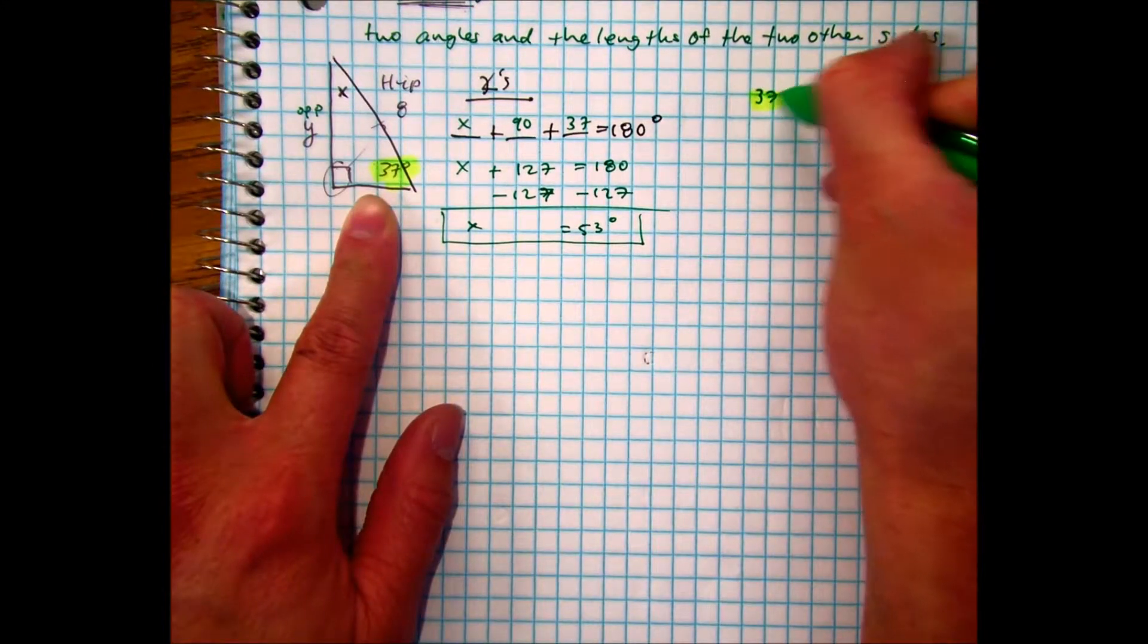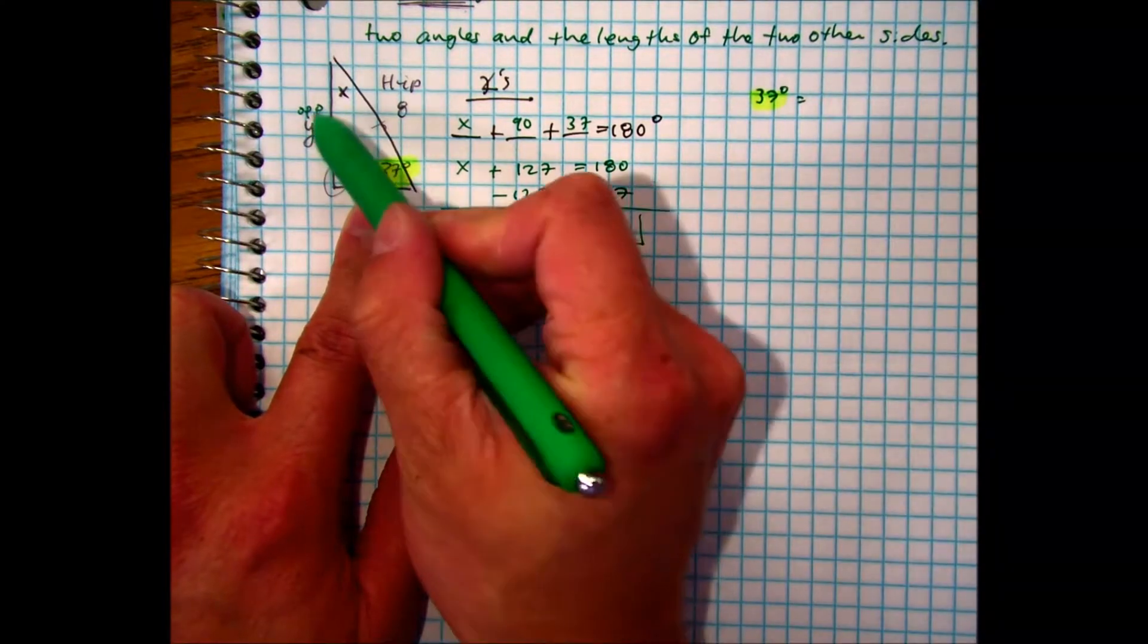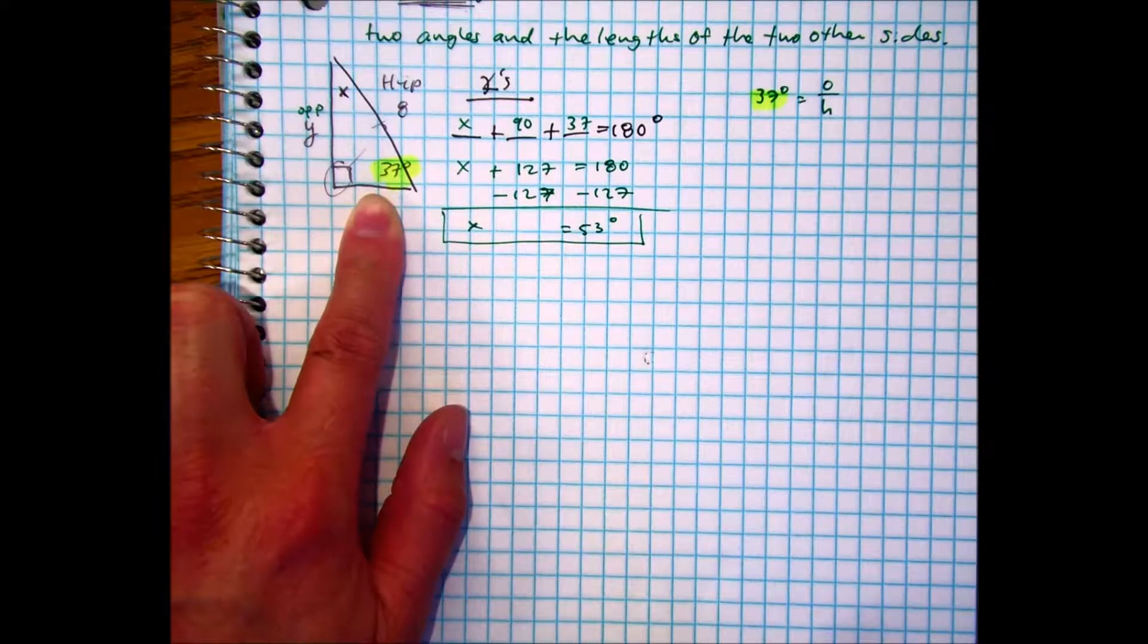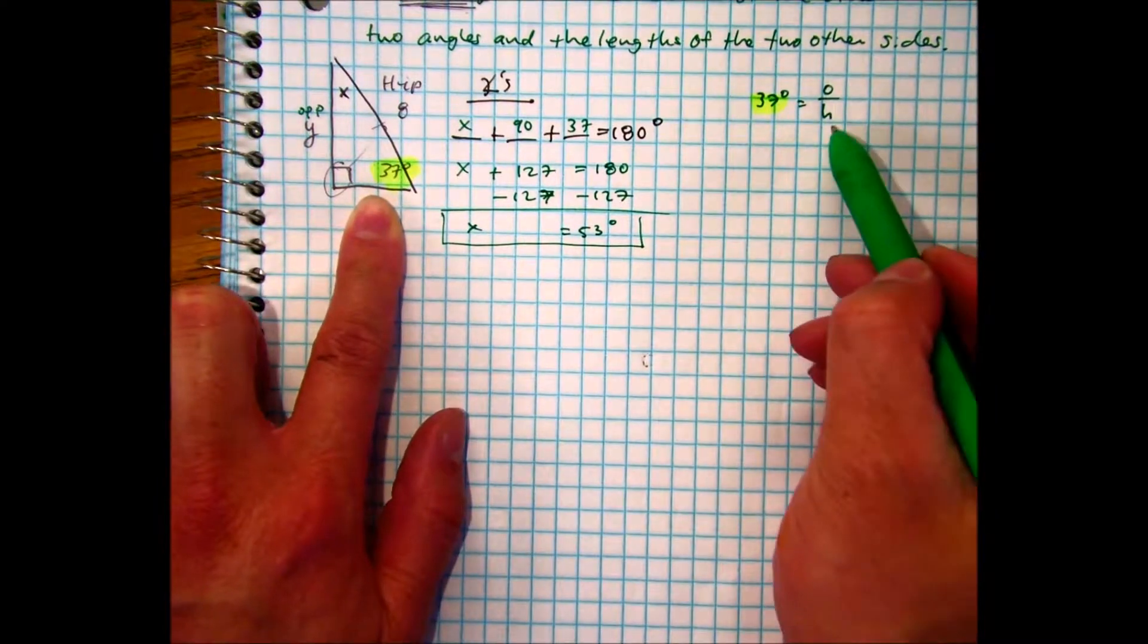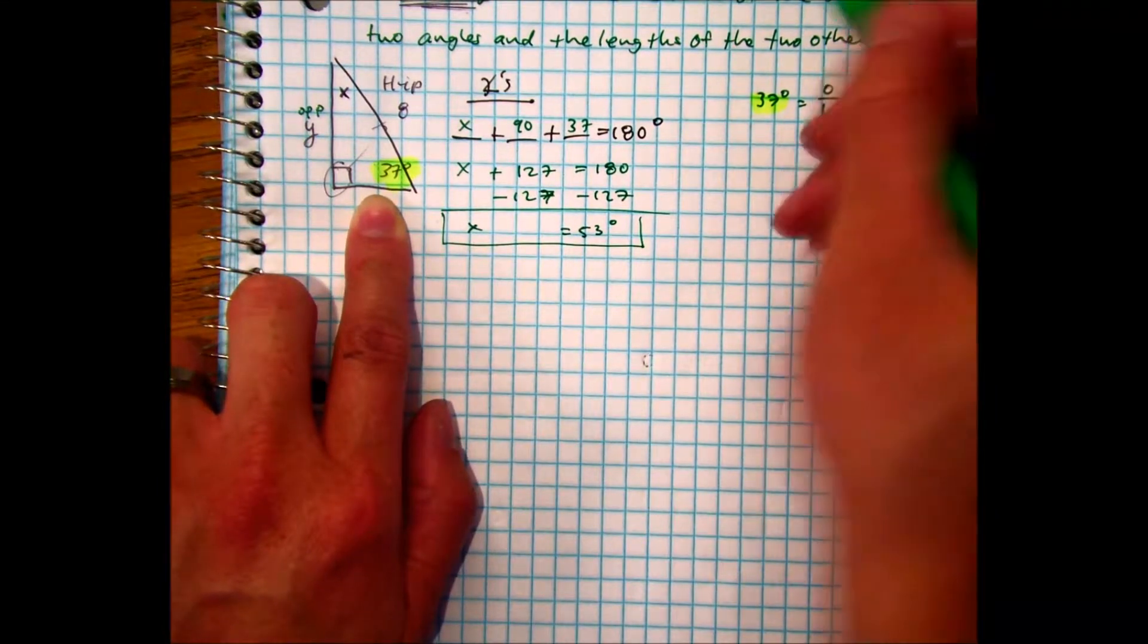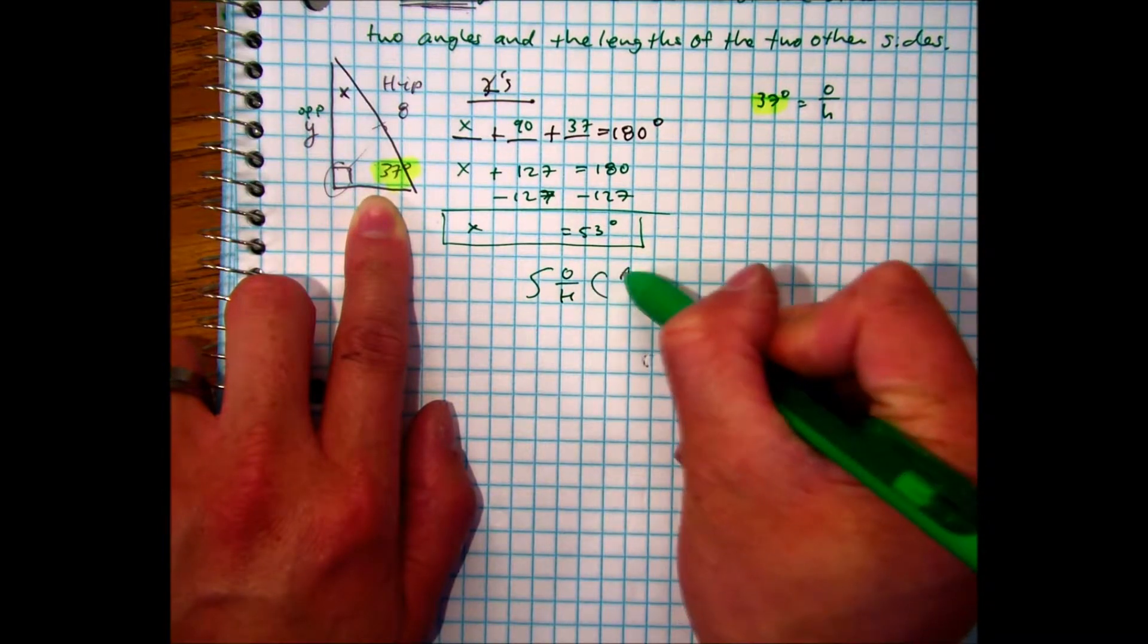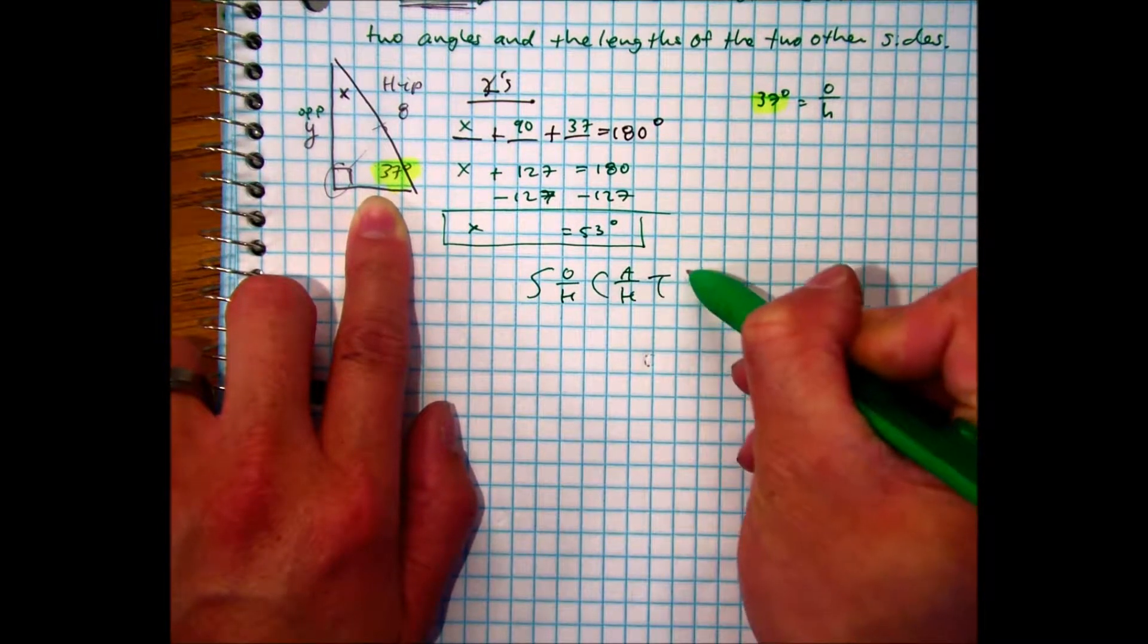So I have 37 degrees as my starting point. I have the opposite over the hypotenuse. Class, on the count of three, tell me the trig function. One, two, three. Sine has opposite over the hypotenuse. So if you need to, put that on your paper.